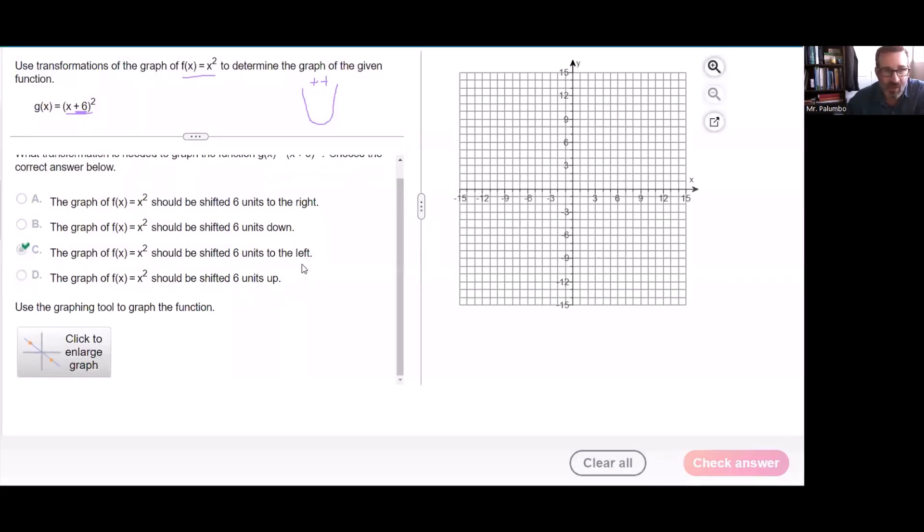And now they want us to graph it. So they give us our graph over here. There's nothing on it. I need to click on the graph first to get that toolbar up at the bottom. And then down here, I'm going to grab the parabola, the x squared tool.